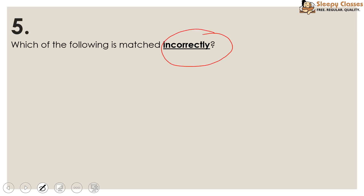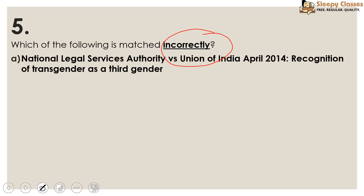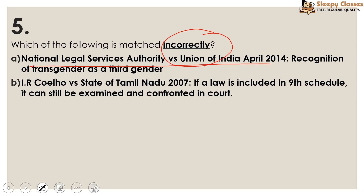Which of the following is matched incorrectly? First: National Legal Services Authority vs Union of India, April 2014 — recognition of transgenders as a third gender. Second: IR Coelho vs State of Tamil Nadu 2007 — if a law is included in the 9th Schedule, it can still be examined and challenged in court. Previously, laws in the 9th Schedule could not be examined in court, but this judgment changed that — now they can be examined.